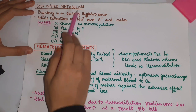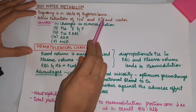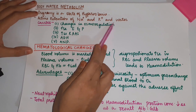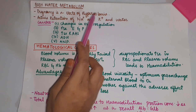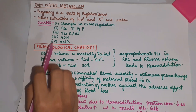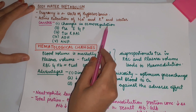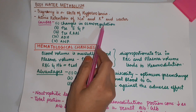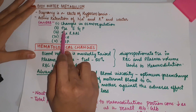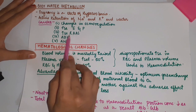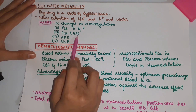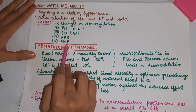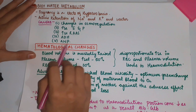Body water metabolism: pregnancy is a state of hypervolemia. Active retention of sodium, potassium, and water occurs in pregnancy. Causes include changes in osmoregulation with increased thirst and water retention, increased estrogen and progesterone, increased renin-angiotensin-aldosterone system, ADH, and atrial natriuretic peptide.